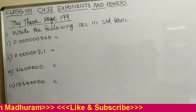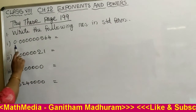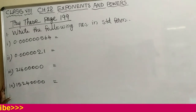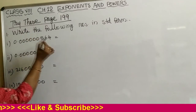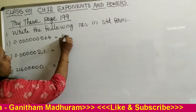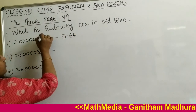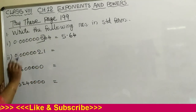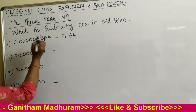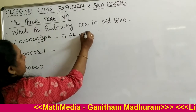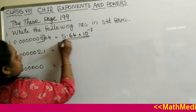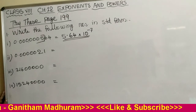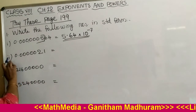Now let's try the questions from page number 199: write the following numbers in standard form. The first number is a decimal number, so the power of 10 will be negative. Take the first non-zero digit and put the decimal point: 5.64. Count to the first non-zero digit — we have 7 places — so we write 10 raised to minus 7. The standard form is 5.64 into 10 raised to minus 7.